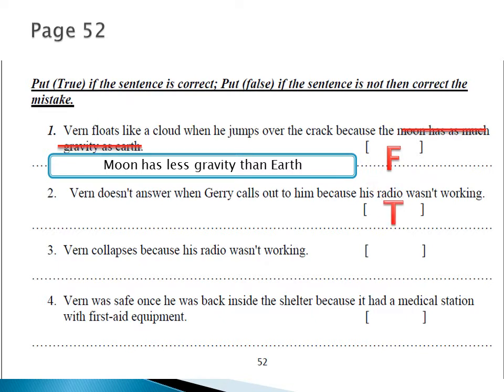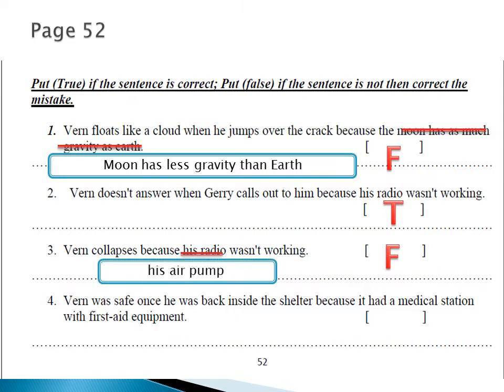Number three: 'Verne collapses because his radio wasn't working.' Collapses means faints or falls down and becomes unconscious. Did he collapse because the radio wasn't working? No — it was the air circulation pumps in the suit that weren't working. So we're going to cross out 'his radio' and write 'the air pump' — his air pump.